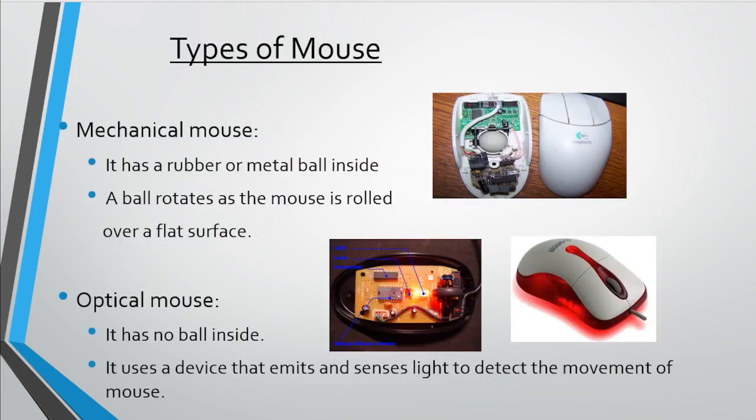There are different types of mouse. In mechanical mouse, it has a rubber or metal ball inside it. The ball rotates as the mouse is rolled over a flat surface. Next is optical mouse. Optical mouse has no ball inside it. It uses a device that emits and senses light to detect the movement of the mouse.